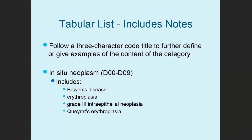Now let's look at includes notes. This is similar to the inclusion term. It follows a three-character code title to further define or give examples of the contents of that code. You'll see 'includes' listed in a box with a colon, then a list of codes included here. For the category in-situ neoplasm D00 to D09, this includes Bowen's disease, erythroplasia, grade three intraepithelial neoplasm, et cetera. It's used to make you feel confident you're in the right area, or to tell you that you're not.